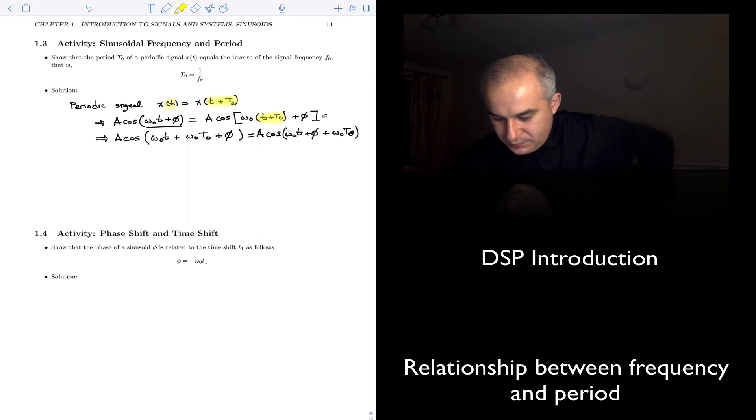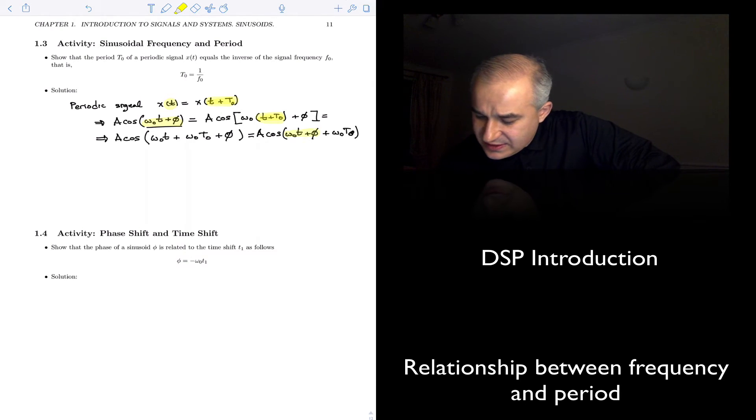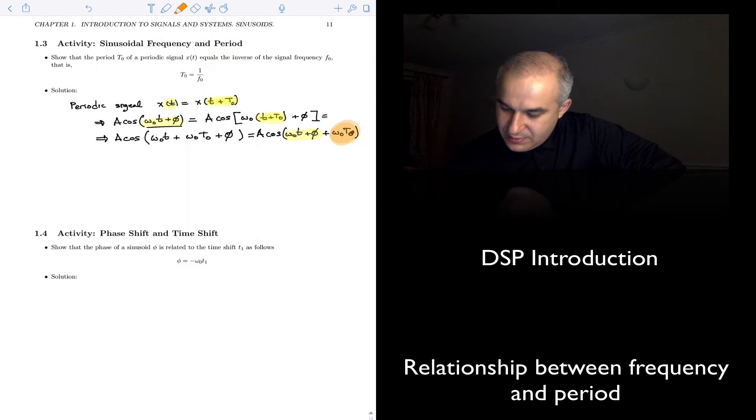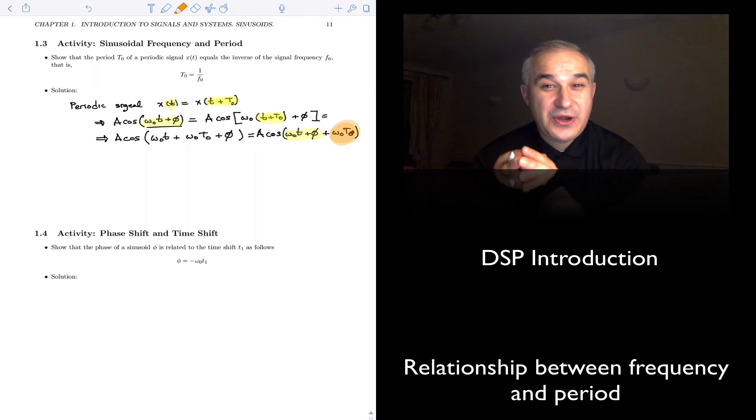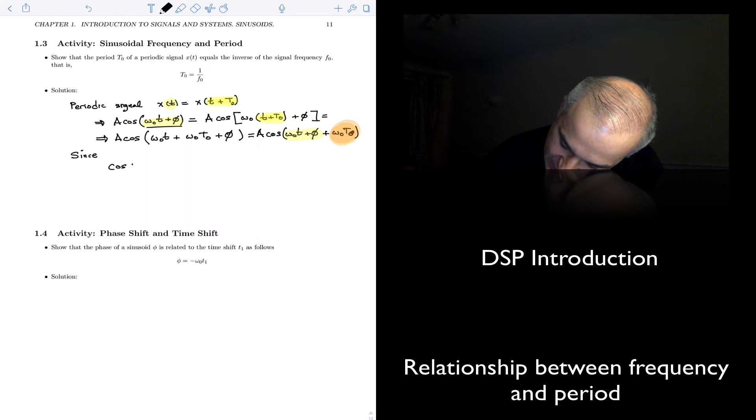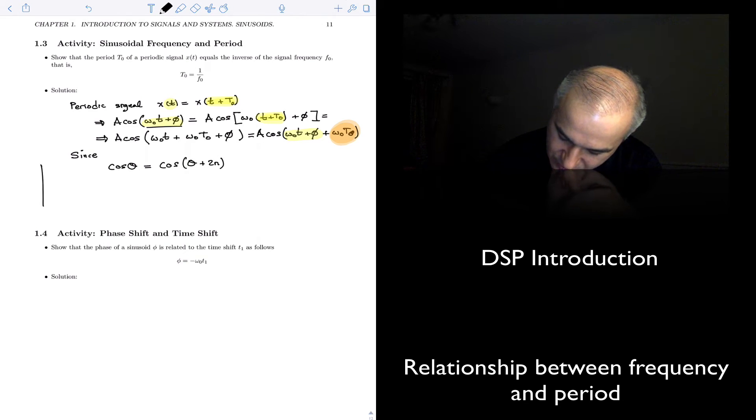So notice, this was our starting point. We get something that is the same plus something else here. Well, let's look at the periodicity of the cosine. Since we have that cosine of theta is equal to cosine of theta plus 2 pi. You can recall here, zero pi, two pi, the cosine value here.